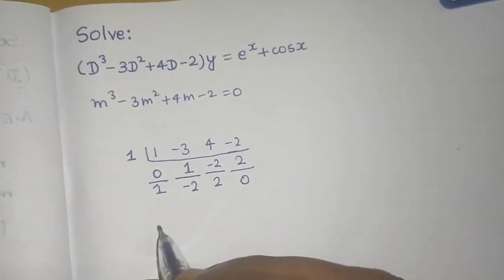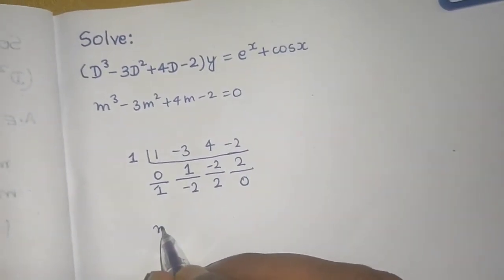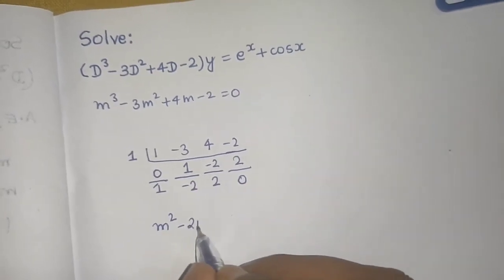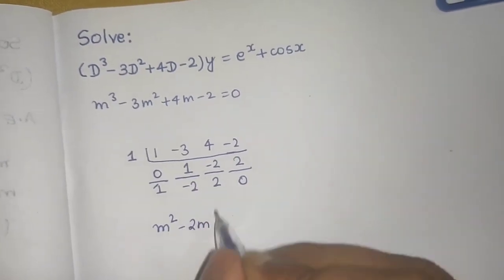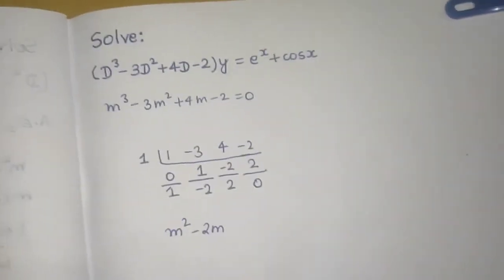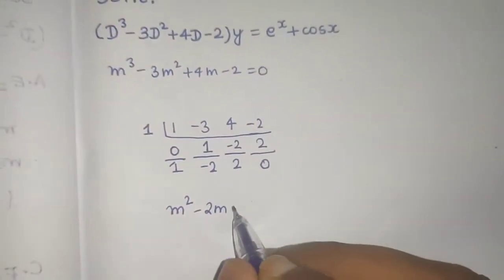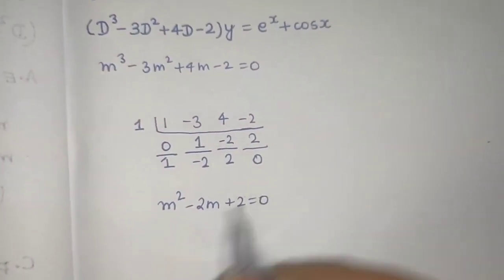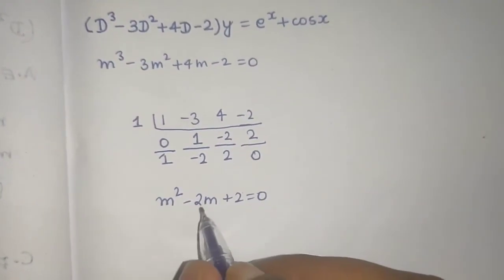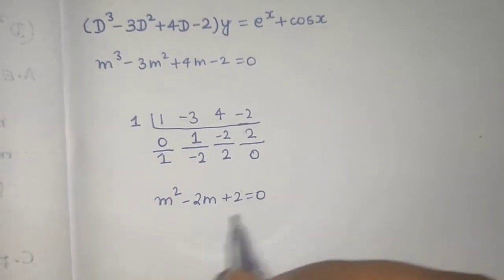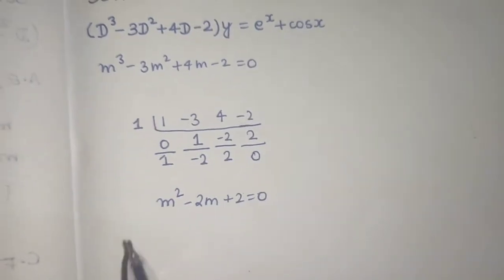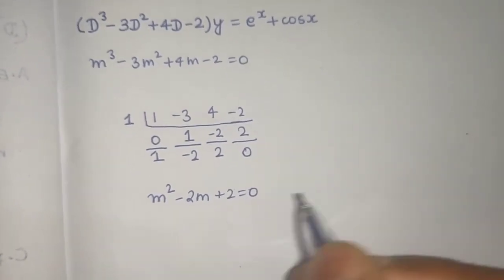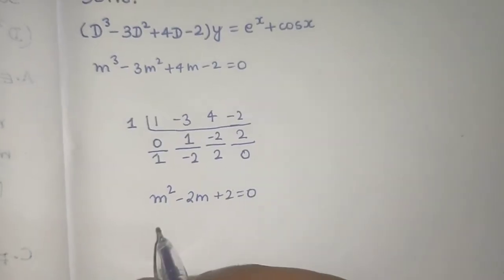The cubic reduces to a quadratic: m² − 2m + 2 = 0. Now let's find the roots of this quadratic.